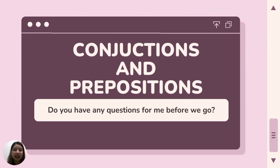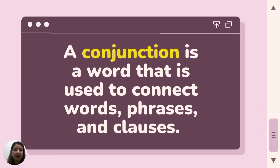Now that we were able to identify the types of sentences according to structure, let us talk about the proper usage of conjunctions and prepositions, which you will need to connect your compound and complex sentences. There are many conjunctions in the English language, but some common ones include and, or, but, because, for, if, and when. A conjunction is a word that is used to connect words, phrases, and clauses.